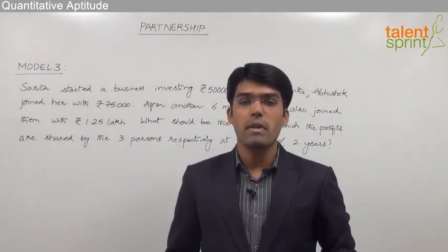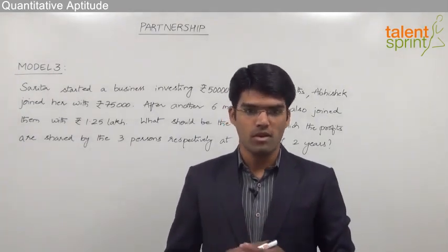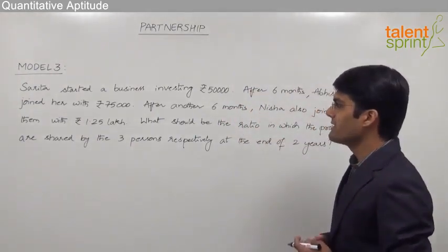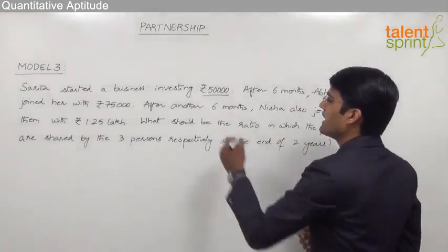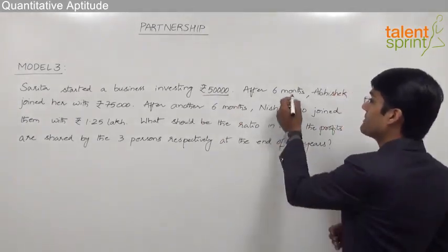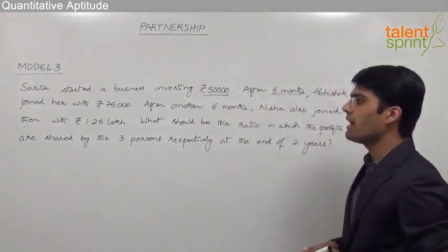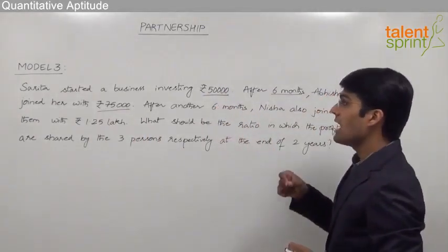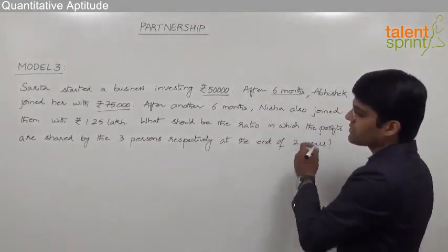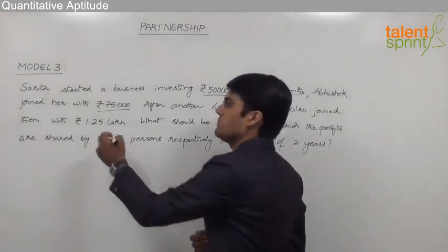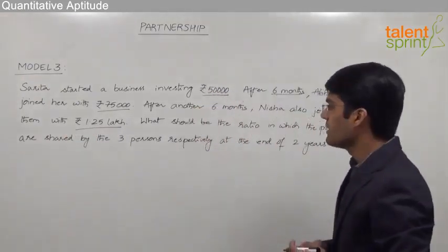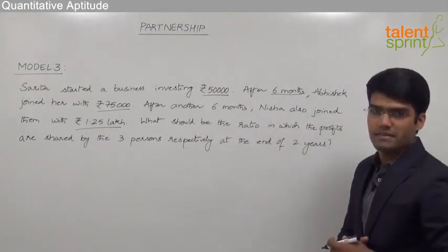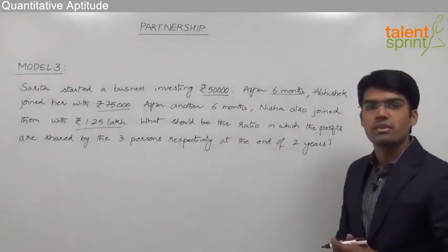Let us now take another model from partnership where 3 partners are involved in the business. The question here is: Sarita started a business investing rupees 50,000. After 6 months, Abhishek joined her with rupees 75,000. After another 6 months, Nisha also joined them with rupees 1.25 lakh. What should be the ratio in which the profits are shared by the 3 persons respectively at the end of 2 years?